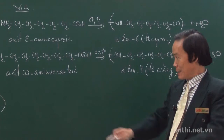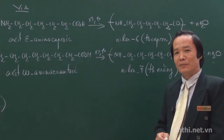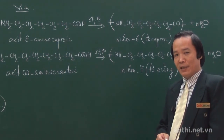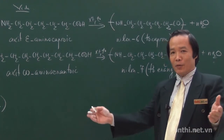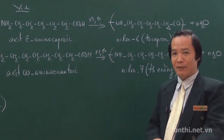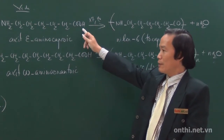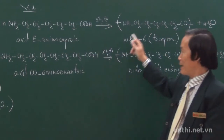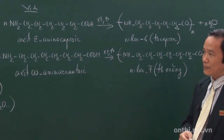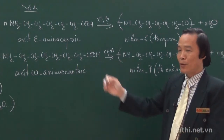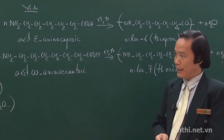Nếu thi đại học, các em còn phải viết thêm phản ứng điều chế Nylon 6-6 và polyethylene terephthalate — đó cũng là 2 polymer điều chế bằng phản ứng trùng ngưng. Tuy nhiên thi tốt nghiệp trung học phổ thông thì nắm 2 polymer Nylon 6 và Nylon 7 là đủ. Vậy thì phần polymer, thầy đề nghị các em phải nắm vững những gì thầy vừa trình bày.